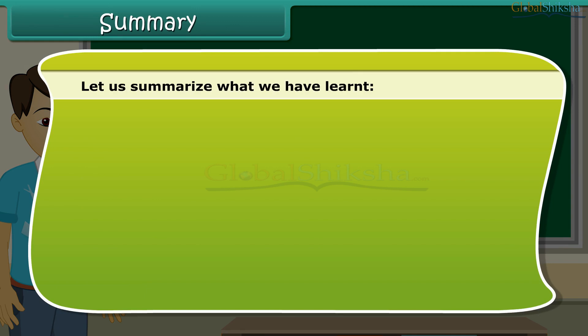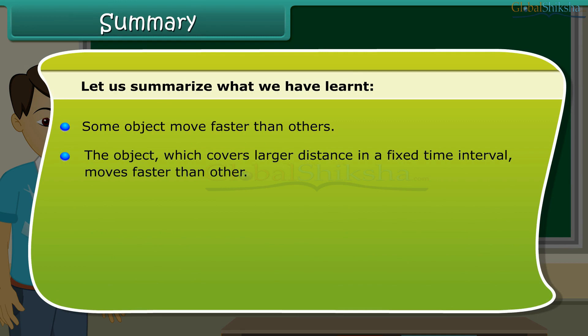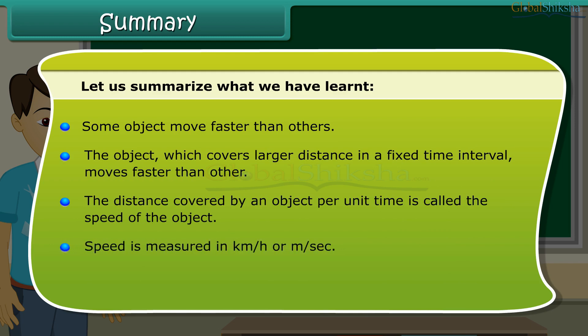Let us summarize what we have learned. Some objects move faster than others. The object which covers larger distance in a fixed time interval move faster than other. The distance covered by an object per unit time is called the speed of the object. Speed is measured in kilometer per hour or meter per second. Speedometer measures the speed of a vehicle and odometer shows the distance covered by it.